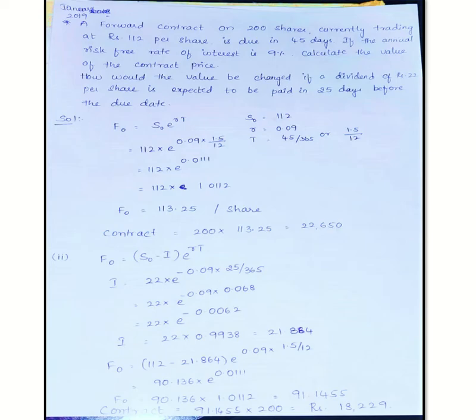So let's use the formula: F₀ = S₀ × e^(rt). Substituting the values: 112 × e^(0.09 × 1.5/12). So I got the value e^0.0111.